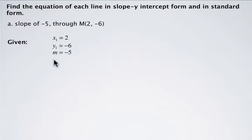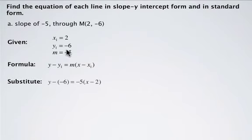So what we can do is use our point-slope formula, which is y minus y₁ equals m times (x minus x₁). When we substitute in, we're going to sub in y₁ is negative 6, m is negative 5, and x₁ is 2.